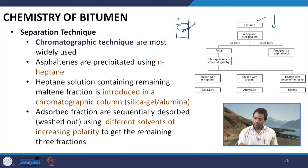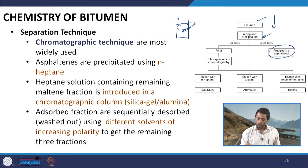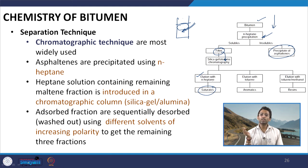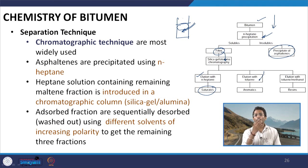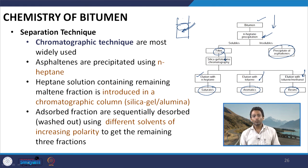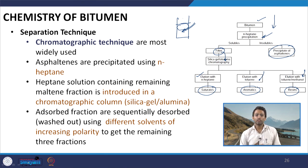We take the bitumen, perform n-heptane precipitation, and the insolubles give a direct measure of the amount of asphaltenes. The solubles are filtered and introduced to the silica gel or alumina gel chromatographic column. Elution with n-heptane will separate out saturates. The remaining portion is eluted with toluene to separate out aromatics. The remaining part in the chromatographic column can be eluted using a combination of toluene and methanol to get the measure of resins. This way you can approximately find out the percentages of different fractions within the bitumen system.